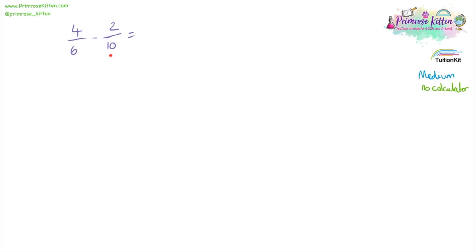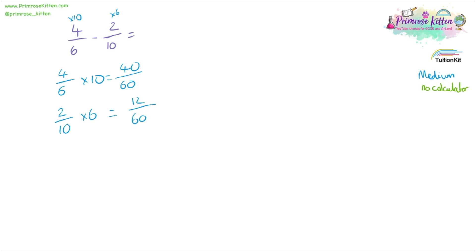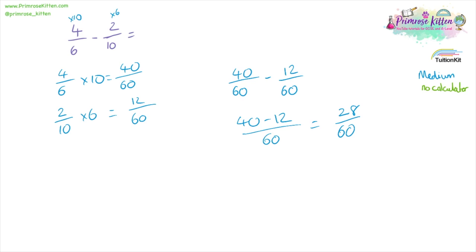Moving on to some slightly trickier ones now, where the numbers on the bottom are not the same. The first thing we need to do is to make them the same. So I'm going to times this one by 10 and this one by six. Four over six times 10: four times 10 is 40, six times 10 is 60. So the sum is 40 over 60 minus 12 over 60. We can write 40 minus 12 over 60, which is 28 over 60. Both 28 and 60 are divisible by four: 28 divided by four equals seven, 60 divided by four equals 15. So our answer is seven over 15.